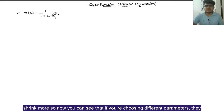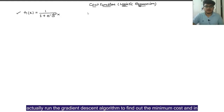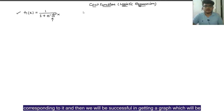If we are choosing different theta parameters, we get different types of curves. What we have to do is find out the cost for each curve and then run the gradient descent algorithm to find the minimum cost. By finding the minimum cost, we find the corresponding theta parameters, and then we get a graph which best fits our dataset.